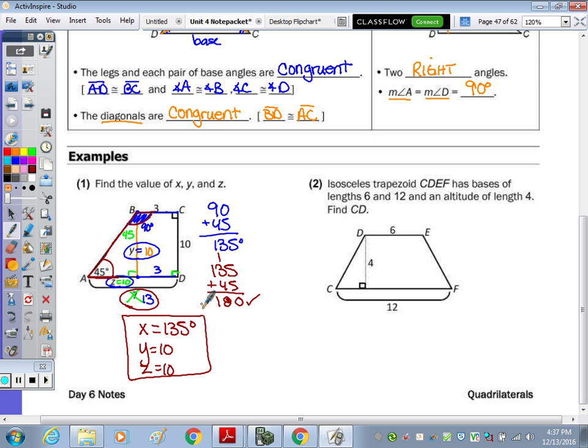And number 2, we have isosceles trapezoid, CDEF, and it has bases of length 6 and 12 and an altitude of length 4. Find CD. So CD is right here. Well, it's a part of this right triangle right here that's in the trapezoid. We can find this segment right here by drawing another altitude on that side. So that means this would be 6, and these two pieces would be congruent. So if I subtract 6 from 12, I get 6, and then divide the 6 into two equal pieces. That means this is 3, and this is 3. And that would be the 3, 4, 5 Pythagorean triple. So CD is equal to 5.